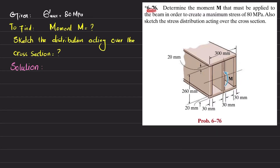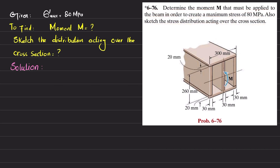Welcome back, problem 6.76. The statement is: determine the moment M that can be applied to the beam in order to create a maximum stress of 80 megapascal. Also sketch the stress distribution over the cross section. This is the cross section of the beam and the moment M is applied about the neutral axis.